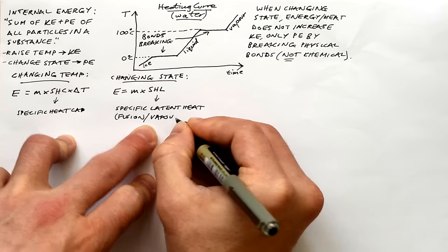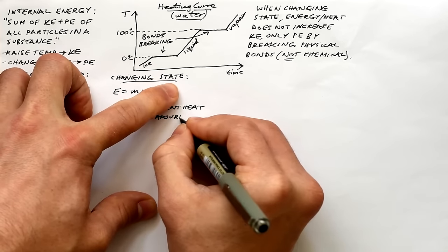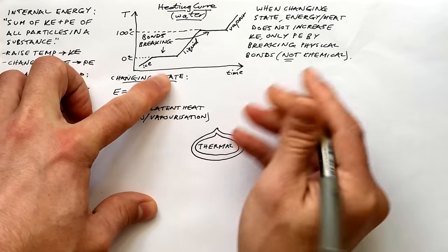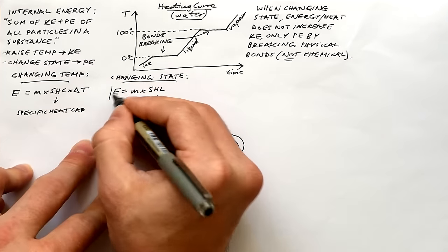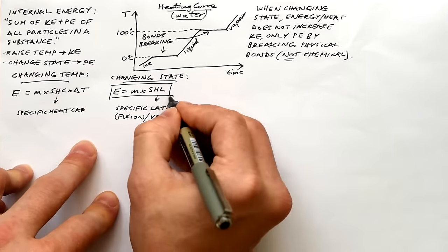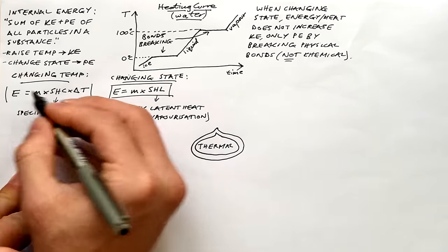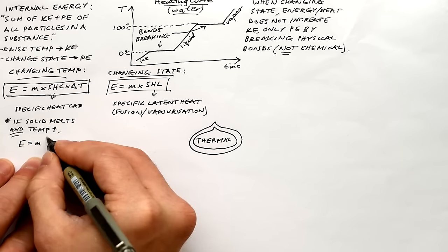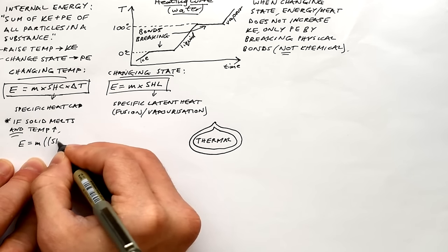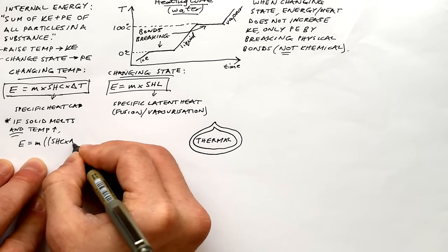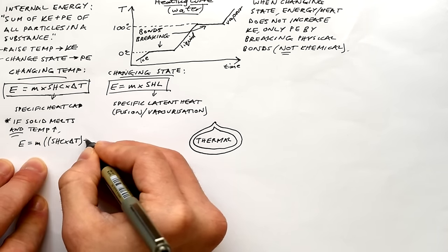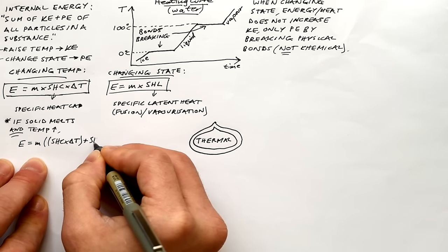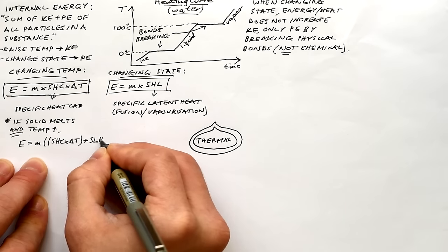There are two different specific latent heats: the specific latent heat of fusion and of vaporization. The first is for melting and freezing, the second is for evaporating and condensing. The equations are fairly easy, but they've asked some pretty tricky questions even at GCSE lately. If you have a solid that is melting and the temperature goes up, then we know that the energy equals m times SHC times delta T, and m times SLH, because we need both of those energies to raise the temperature and change the state.